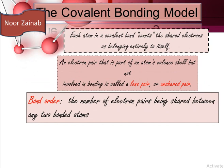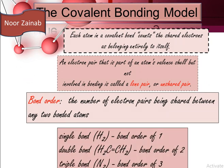Bond order is the number of electron pairs being shared between any two bonded atoms. A molecule with a bond order of 1 contains a single bond — for example H₂. A double bond has a bond order of 2, for example O₂. A triple bond has a bond order of 3 — for example, N₂ gas has a bond order of 3 because nitrogen molecules are joined by three covalent bonds.